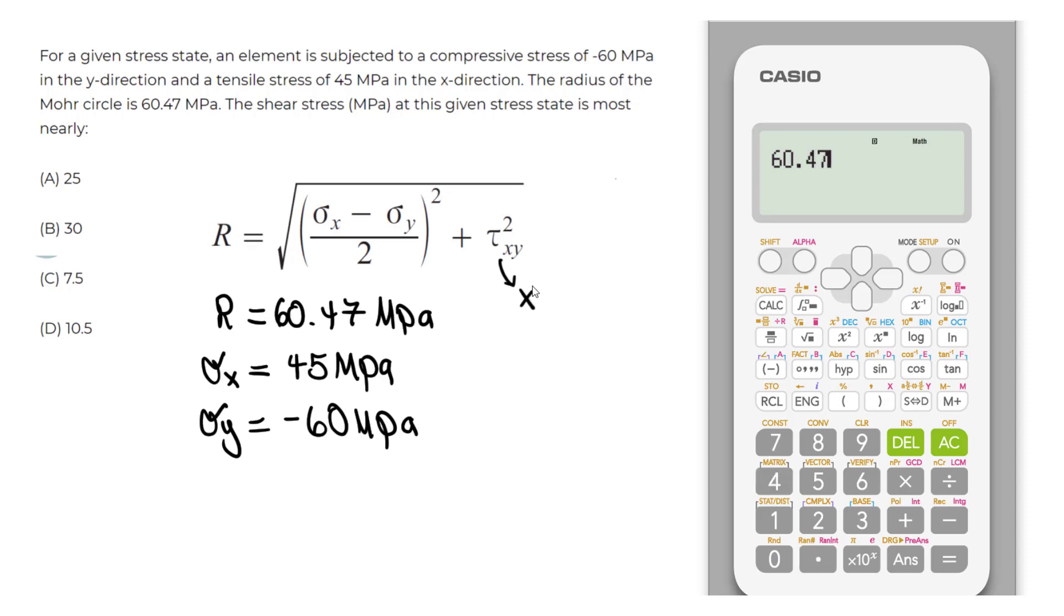Then we have equals to. Make sure you put your equal to symbol. Don't use this. So we do alpha. And the equal to is in pink. We have to do alpha. This button and we get that equal.